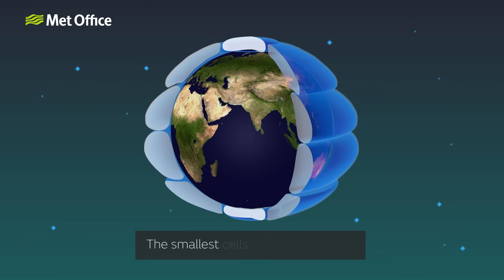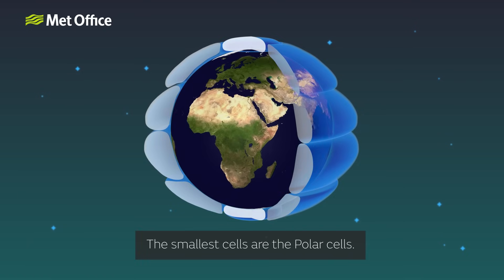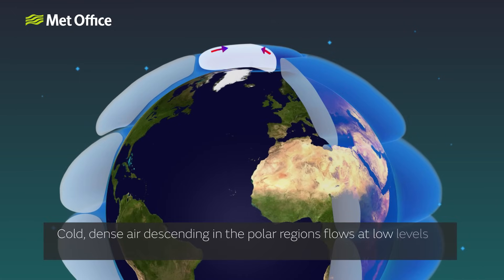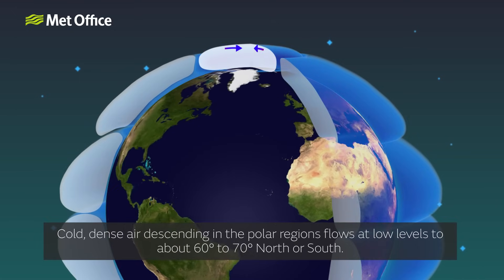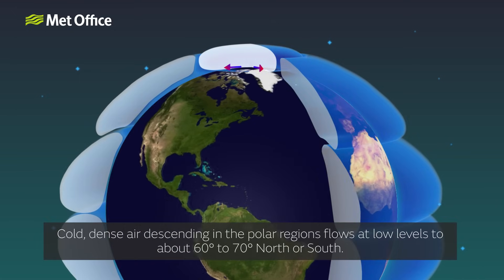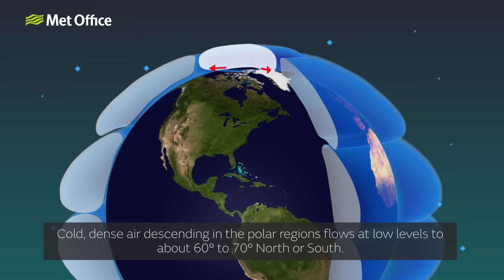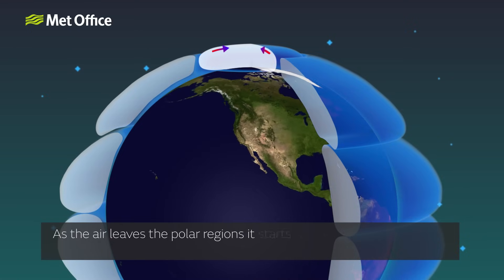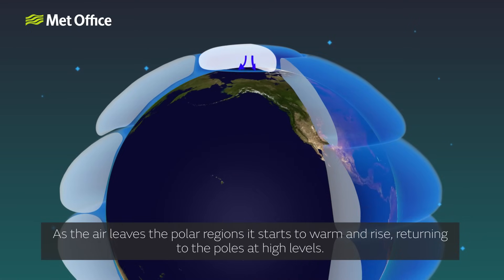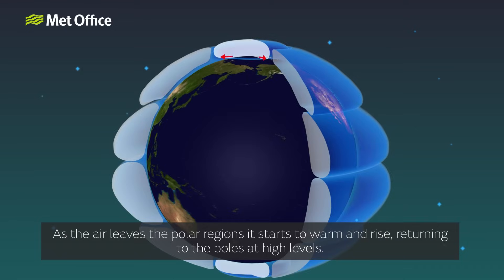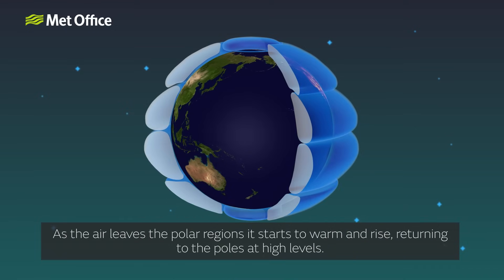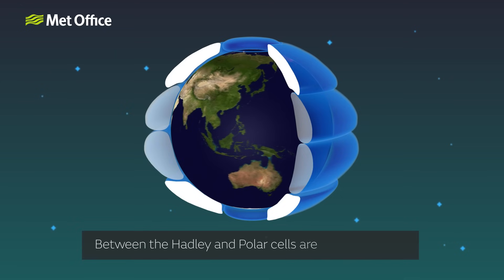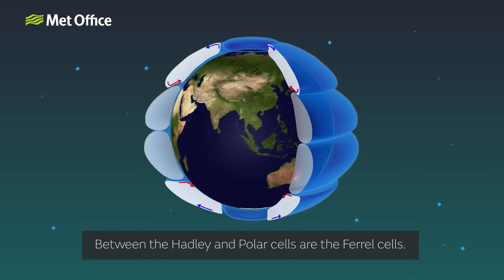The smallest cells are the polar cells. Cold, dense air descending in the polar regions flows at low levels to about 60 to 70 degrees north or south. As the air leaves the polar regions, it starts to warm and rise, returning to the poles at high levels. So, between the Hadley and polar cells are the Ferrel cells.